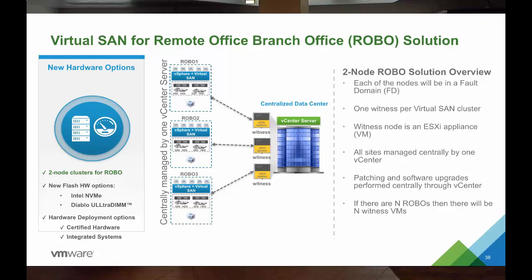We also now offer support for two-node clusters for ROBO. No longer do you have to have three Virtual SAN hosts to create a Virtual SAN inside of your remote site — you can do it now with just two hosts. We're using the witness VM to help provide quorum and serve as that voting mechanism, so we no longer need a minimum of three hosts inside of each space. This also aligns much more closely with the types of workload size deployments, anywhere from 5 to 10 to a maximum of 25 virtual machines inside of those ROBO instances.